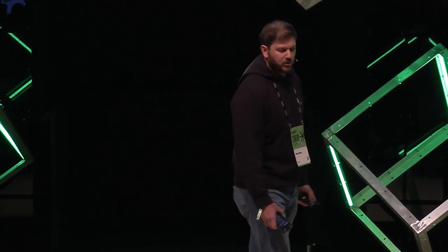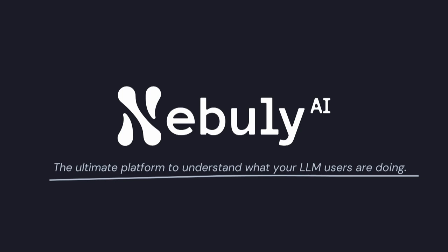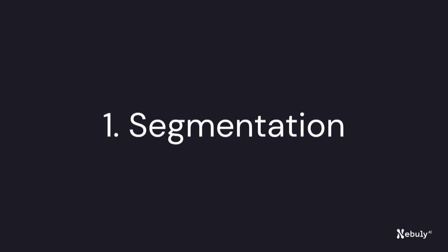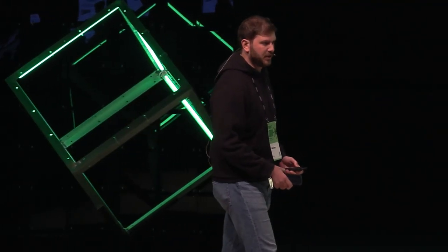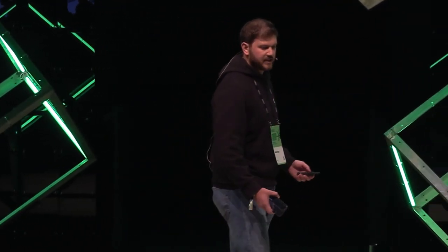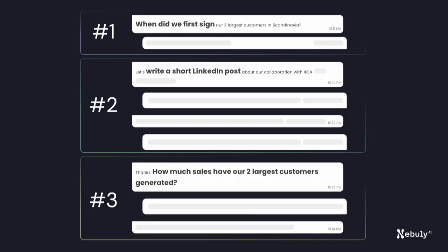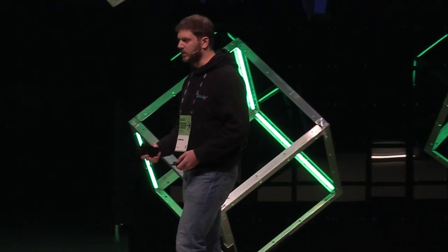Today, I am very happy to introduce you to Nebole, which is the ultimate platform to automatically understand what your LLM users are doing. Let me tell you how we operate in three steps. First, segmentation. Every time you pick a conversation, it's made up of multiple segments — that's where the user intent changes. So the first thing we do is split it up. This is an example: it's one conversation, but your user wants to do three different things, so these are three different segments. We take the conversation as input and split it up into three different pieces.